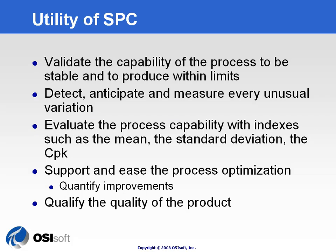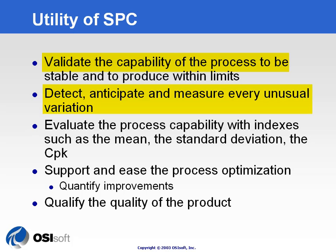What are the benefits of implementing SPC? The first benefit is validation of the capability of the process to operate within limits — you'll see whether the process is stable and can stay within the limits you set. If the process doesn't stay within limits, you'll be able to detect and anticipate non-random variation. You also get a measure of process performance using the mean, the deviation, and the CPK indexes. And for any process optimization initiative, you'll have a sound matrix to quantify the improvements you make.